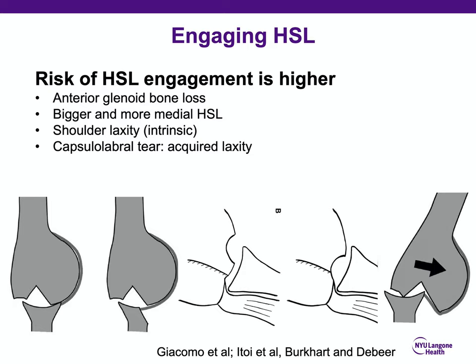In addition, presence of shoulder laxity — either intrinsic or acquired as a result of capsulolabral tear — can make a borderline on-track Hill-Sax lesion become off-track because of laxity.